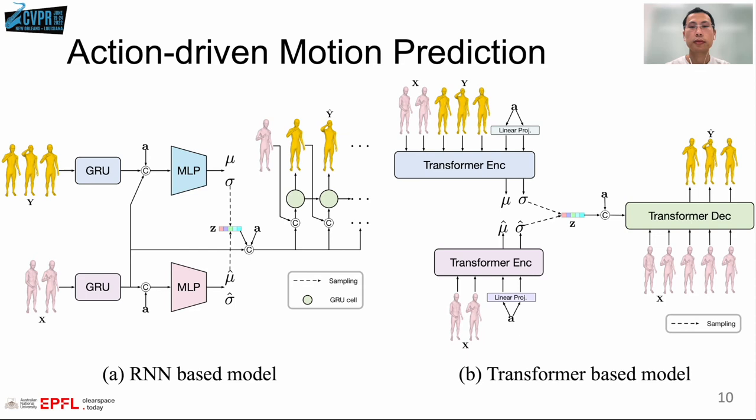We explore two different temporal encoding structures to construct our conditional VAE, recurrent neural networks, RNN, and transformer.